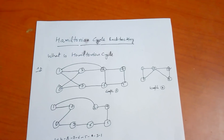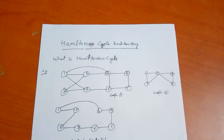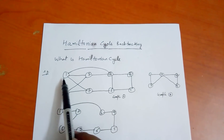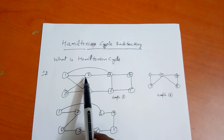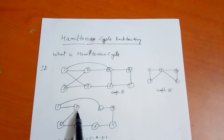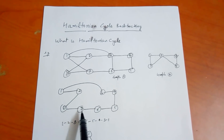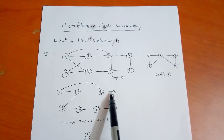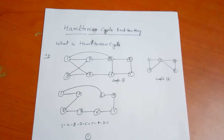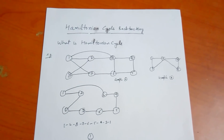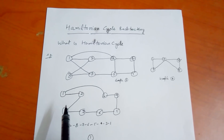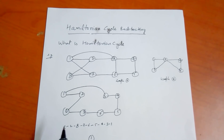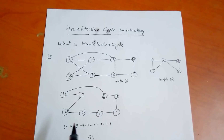In Graph A, we start a tour from node 1. We go from 1 to 2, then 2 to 8, 8 to 7, 7 to 6, 6 to 5, 5 to 4, 4 to 3, and 3 to 1. We start from 1 and return to 1, having visited each node exactly once, so it is a Hamiltonian cycle.